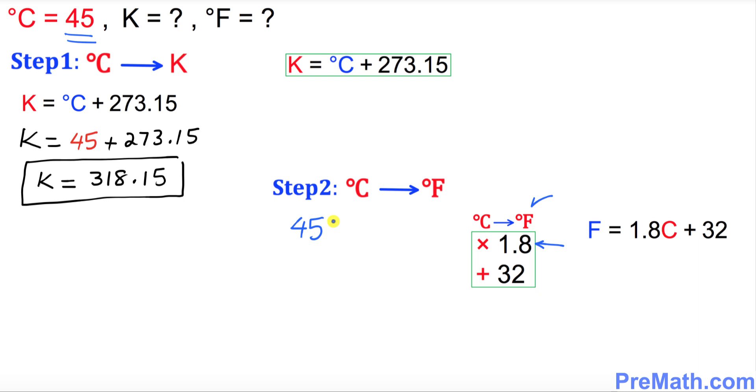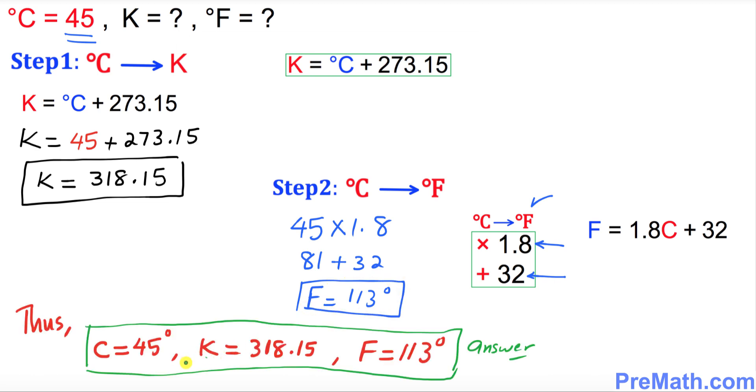Then you add 32 to 81, so that's going to give you 113 degrees as your F value. This is our complete set of answers as you can see.